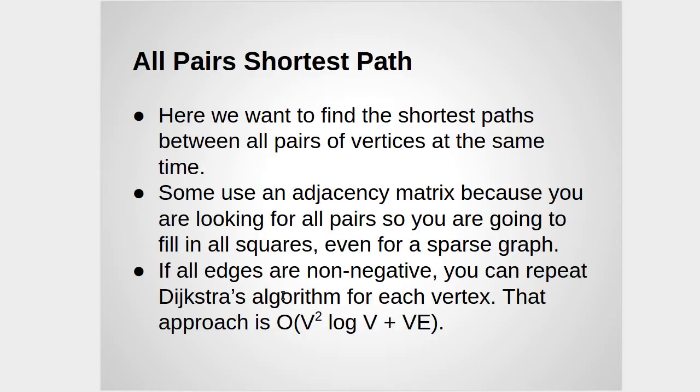Now if you happen to have a problem where all of your edges are non-negative, then just repeating Dijkstra's—so you call Dijkstra's once with the start being zero, another time with start being one, another time with start being two—turns out that's a good algorithm. If all of your edges are not negative, it would run in V² log V + VE. So in a dense graph this is basically going to be V³. In a sparse graph, this term is going to dominate and it's V² log V.